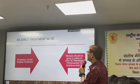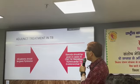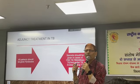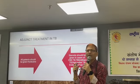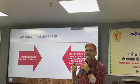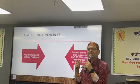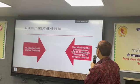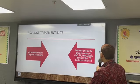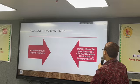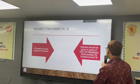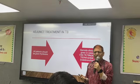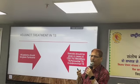Regarding adjunct treatment: all TB patients should be given pyridoxine throughout the course of ATT. Previously, low-dose isoniazid was used with less toxicity risk, but now high doses are used, so there is more chance of isoniazid toxicity — hence pyridoxine for all patients. Steroids are indicated in CNS tuberculosis, TB meningitis, miliary tuberculosis, pericardial tuberculosis, and endobronchial tuberculosis. In certain situations, steroids can also be given in pleural effusion.